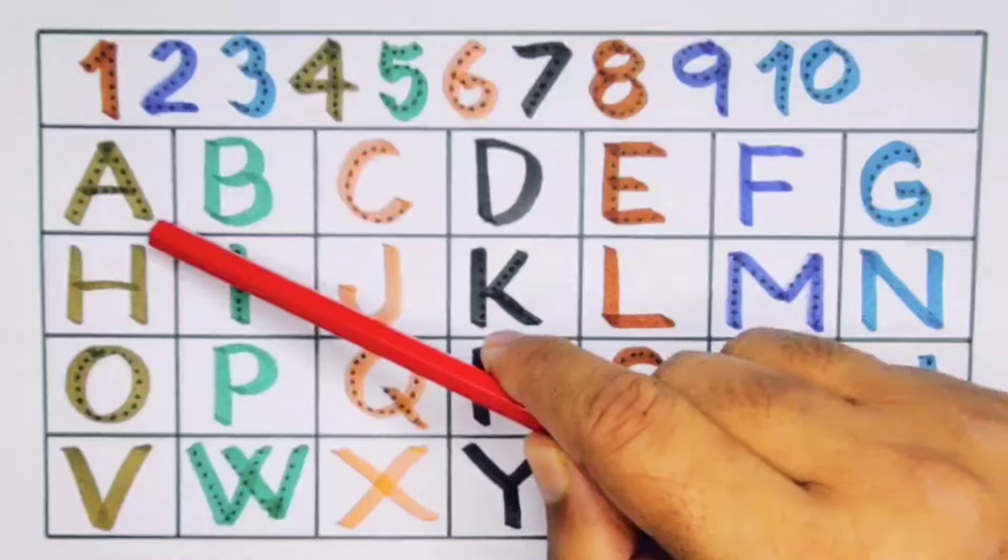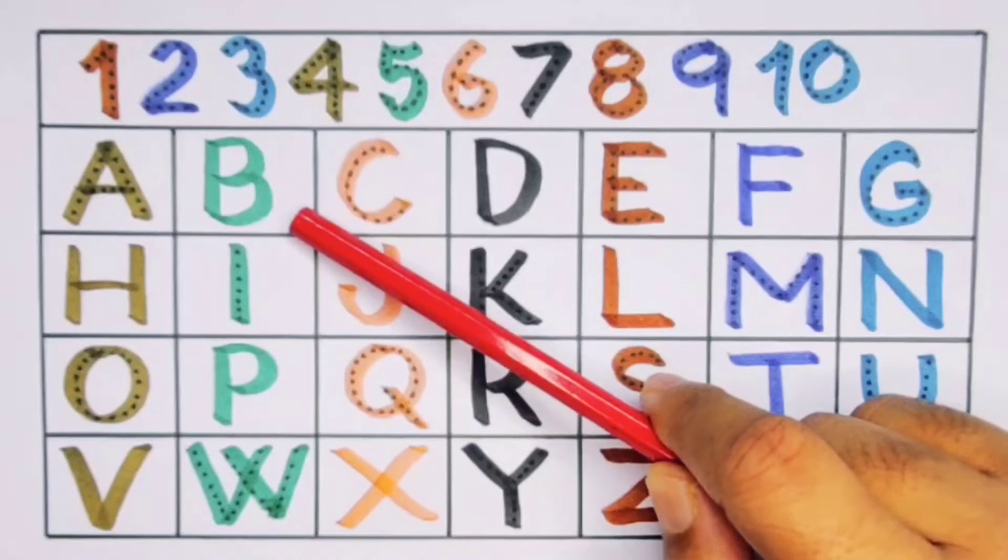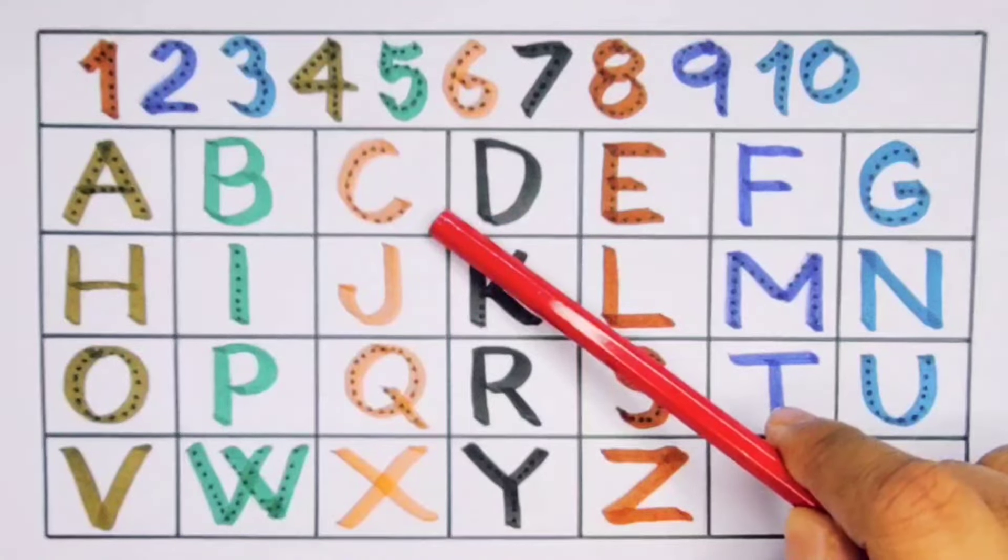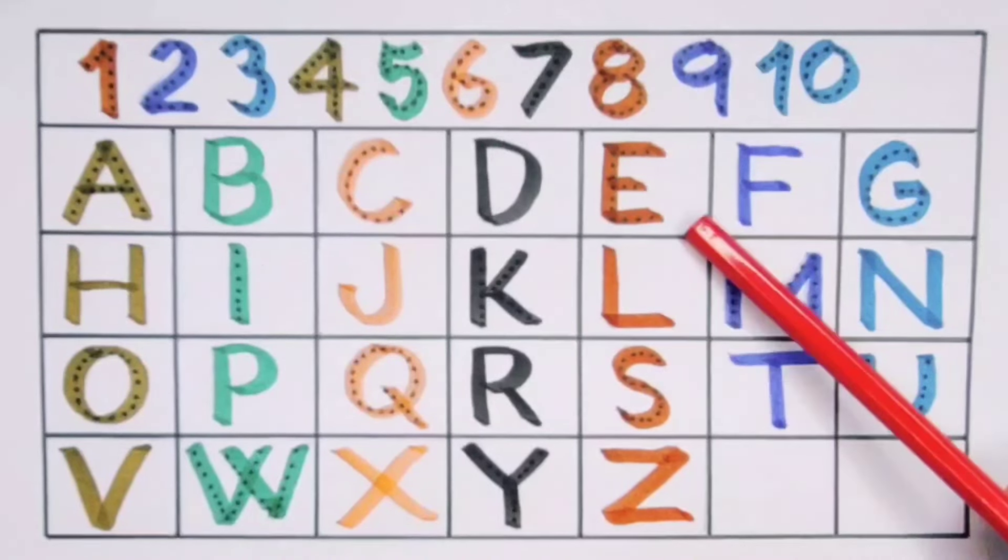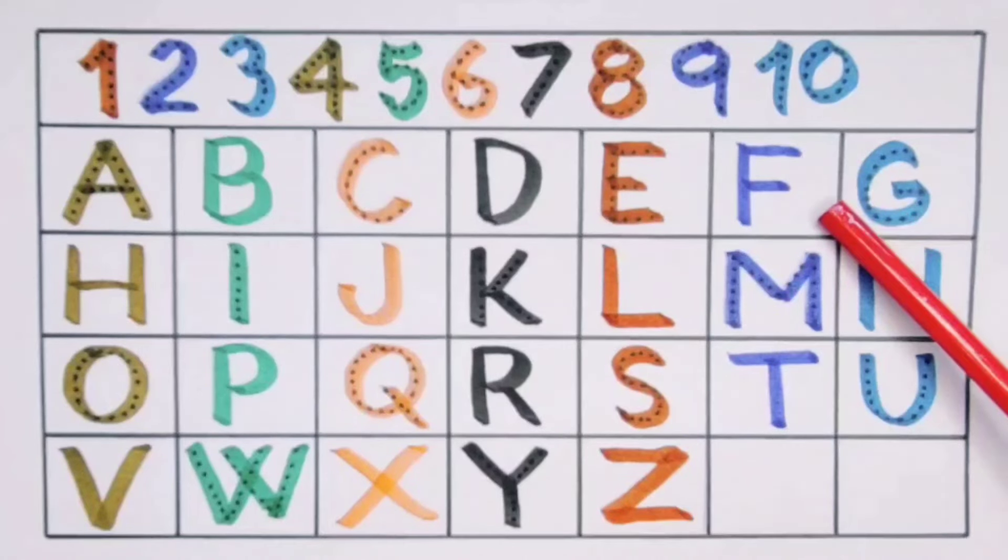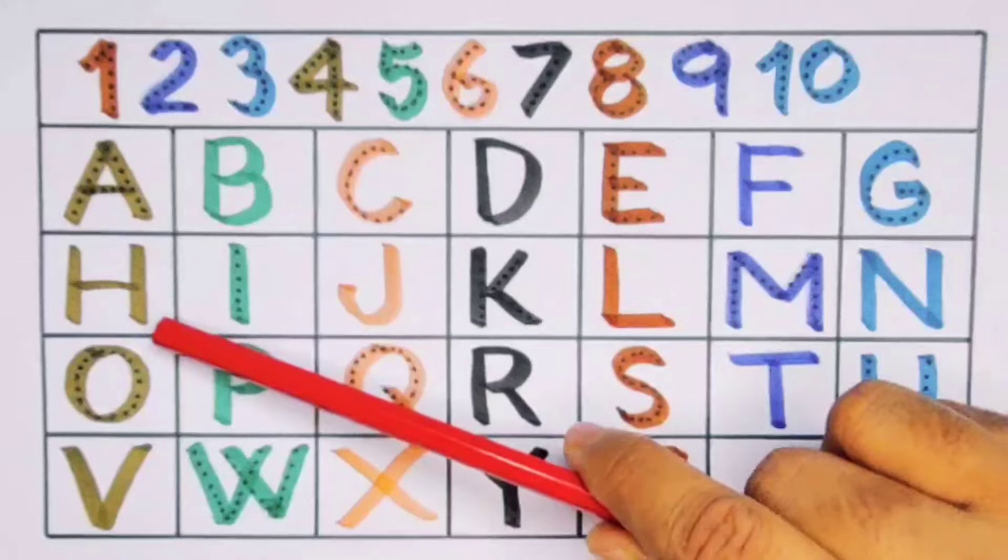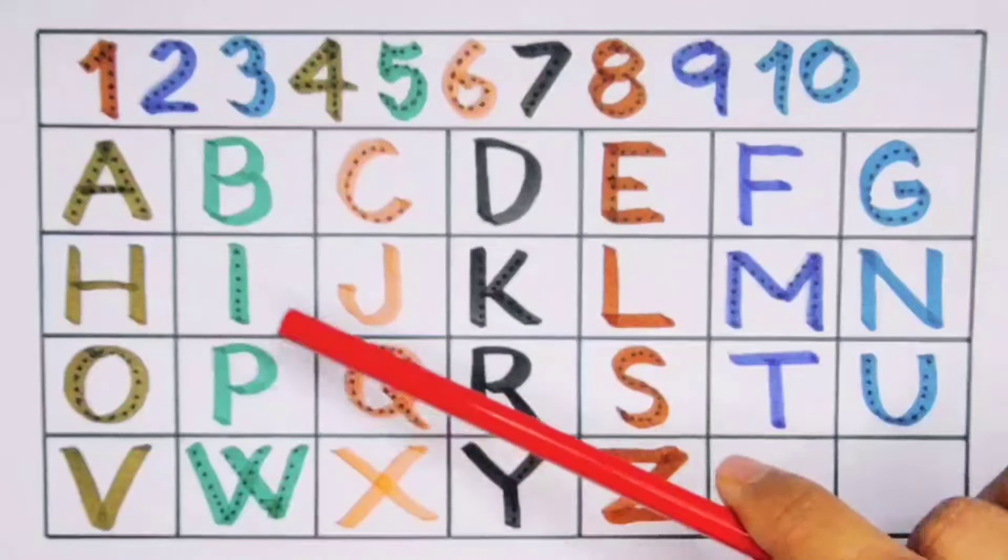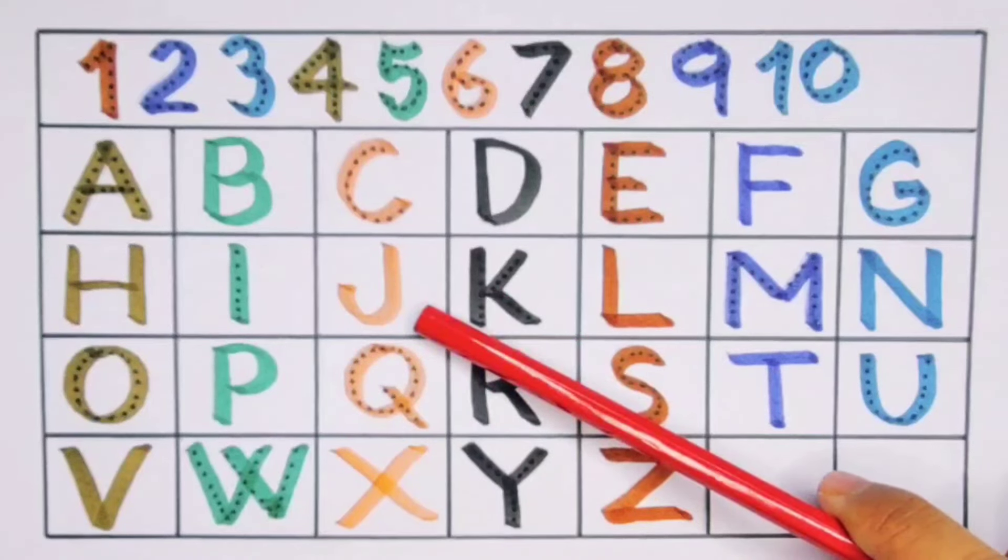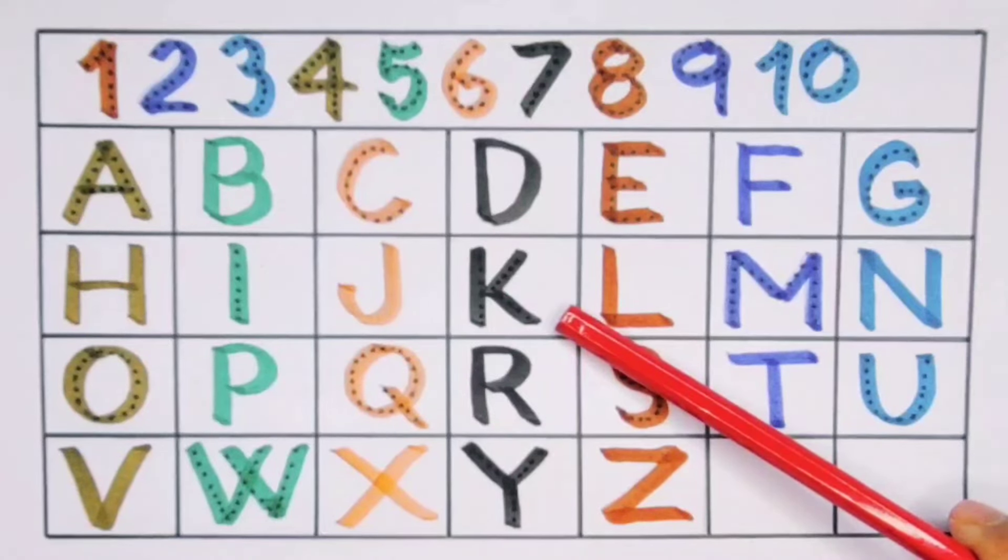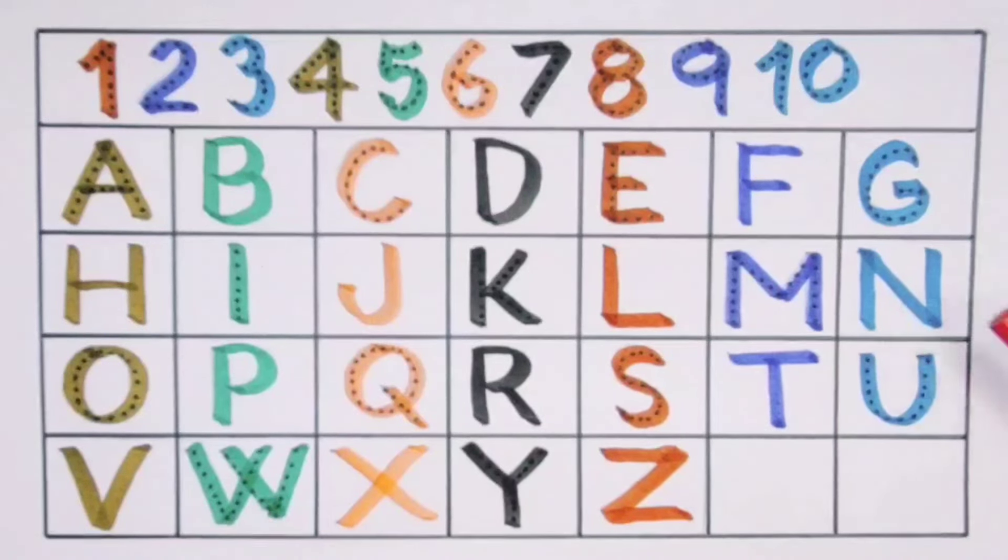We learn: A for Aeroplane, B for Butterfly, C for Car, D for Dolphin, E for Elephant, F for Fish, G for Giraffe, H for House, I for Ice Cream, J for Jam, K for King, L for Lion, M for Moon, N for Nest.